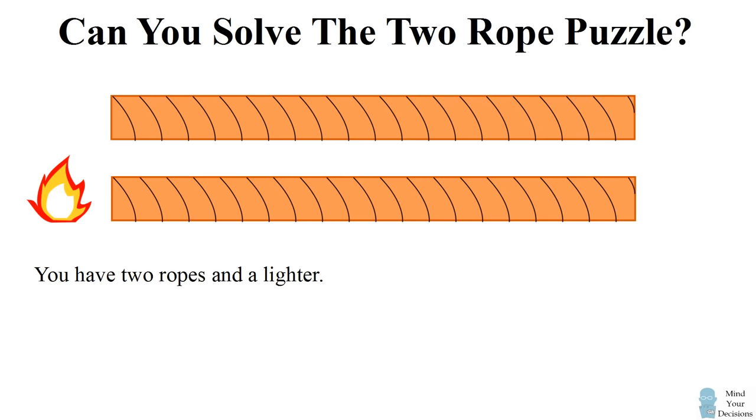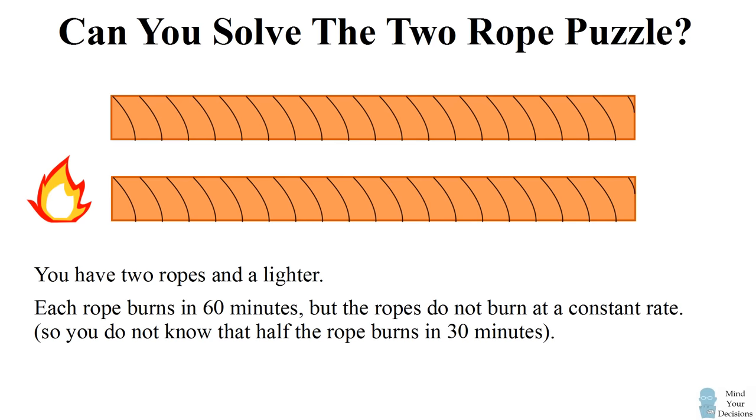These are special ropes. Each rope burns in exactly 60 minutes. The ropes, however, do not burn at a constant rate. So you don't know that half the rope burns in 30 minutes or that X percent of the rope burns in X percent of the time.